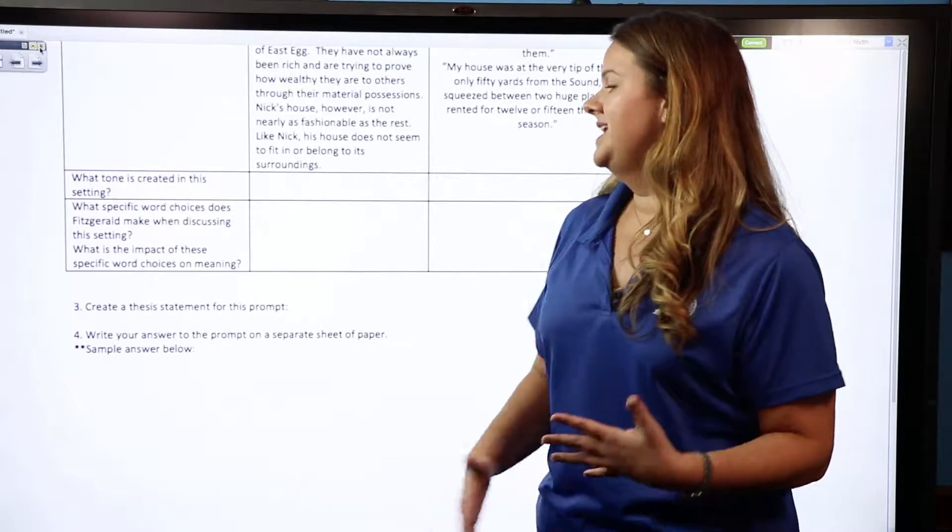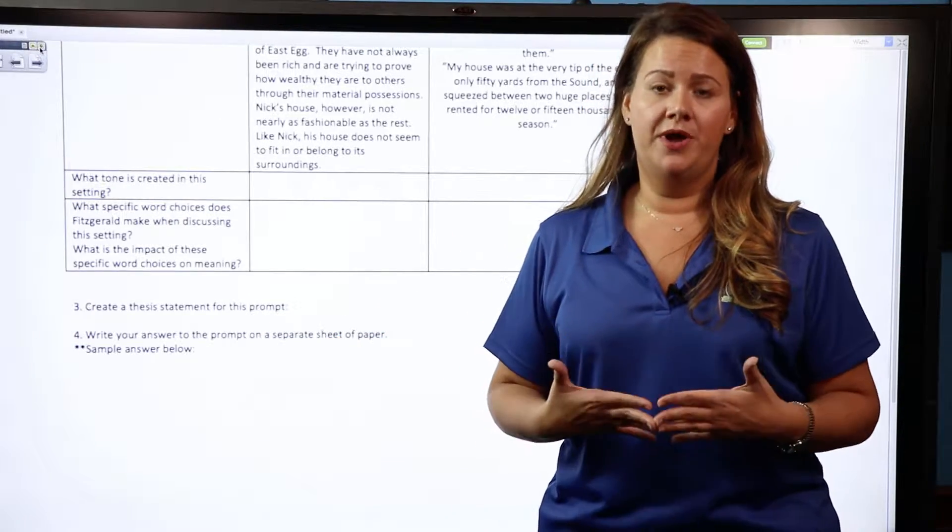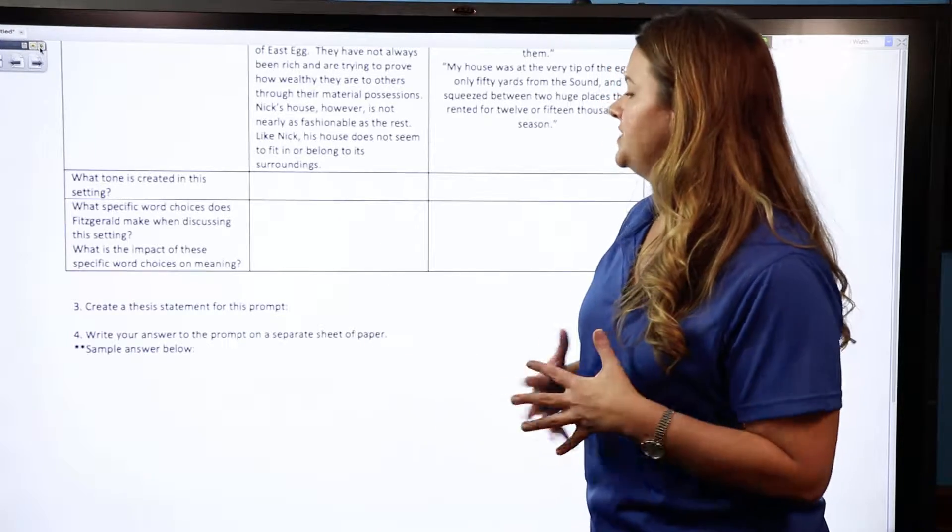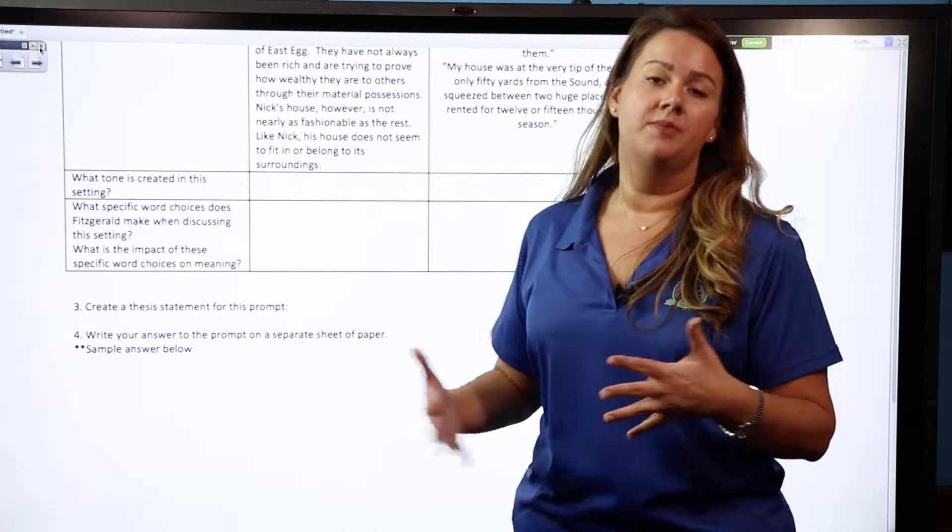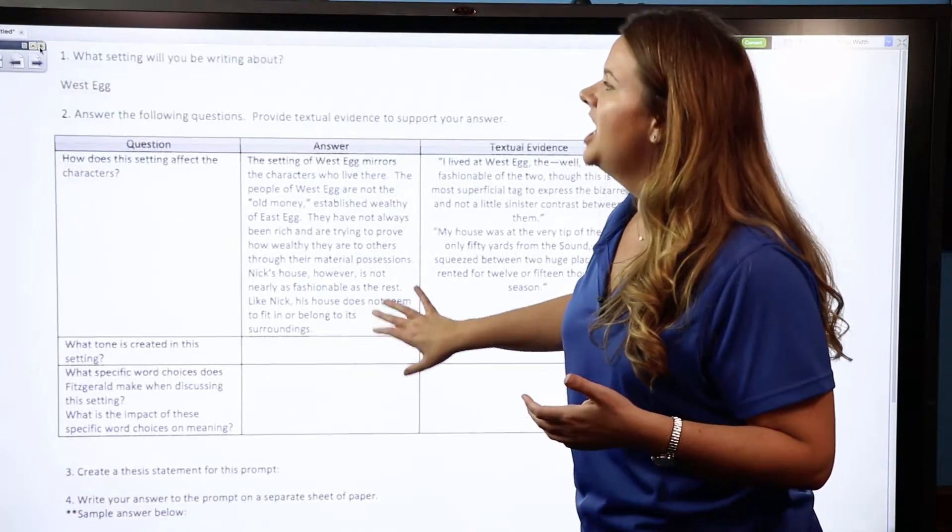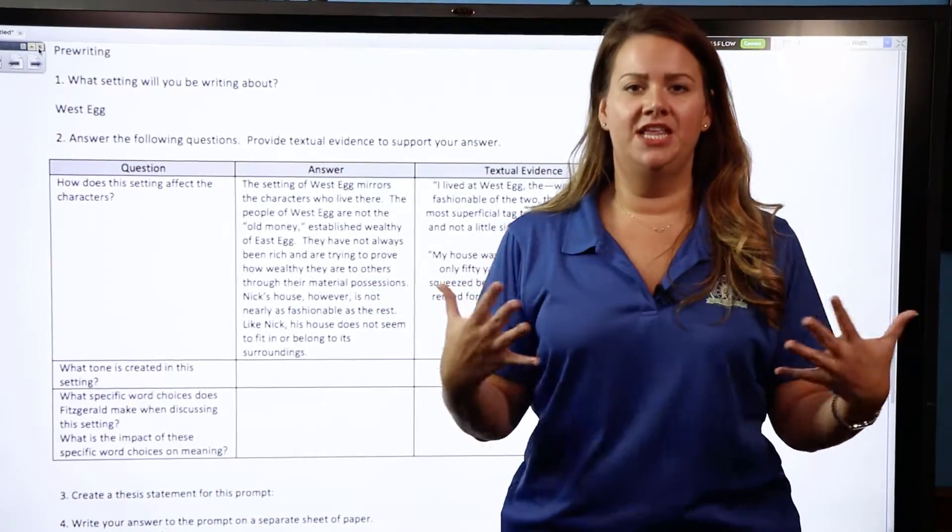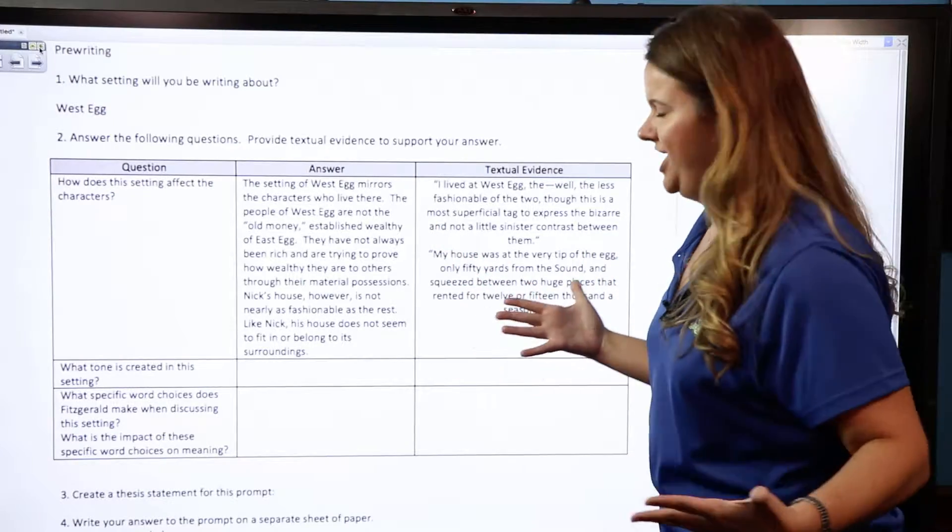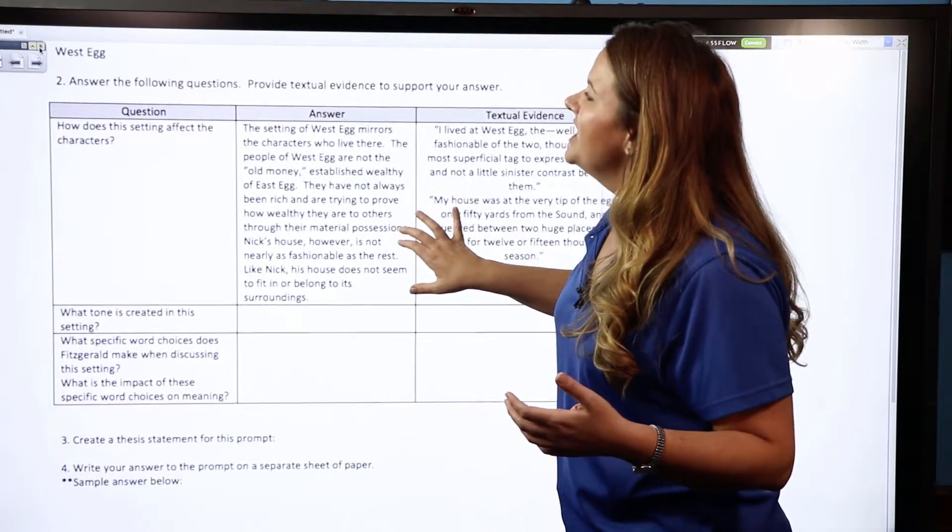You're not getting out of this without including some textual support. And then down here at the bottom, you're going to be asked to go ahead and create a thesis statement for your literary analysis, and then under that, you're going to write your answer to the prompt on a separate sheet of paper or within this document.